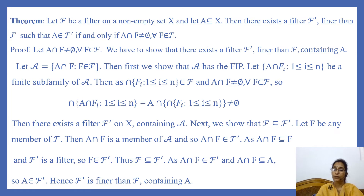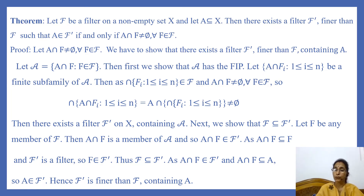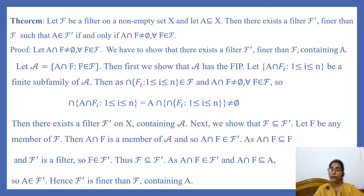Then, as the intersection of F_i for i from 1 to n belongs to F — because F is a filter, it contains finite intersections of its members — and A intersection F is non-empty for every F in F. So the intersection of members of this family, that is the intersection of A intersection F_i for i from 1 to n, equals A intersection of the intersection of F_i, which is non-empty. So this finite sub-family of A has non-empty intersection. Hence A has the finite intersection property. So by the first theorem, there exists a filter F dash on X containing A.